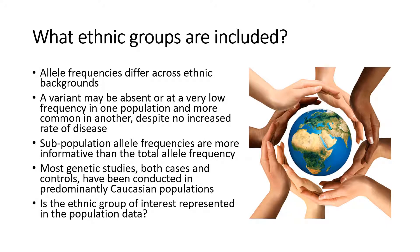What populations were included in our cohort? We know that allele frequencies can differ across different ethnic and regional backgrounds, and that a variant can be rare or absent in one population or ethnic group and common in another, with no difference in the incidence of disease. Looking at all of the subpopulations included in the cohort and determining which one has the highest frequency will be the most informative. The total allele frequency could be skewed if the variant is common in a smaller subpopulation and very rare or absent in larger subpopulations.